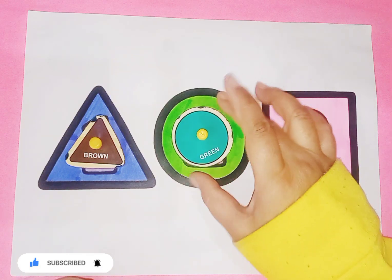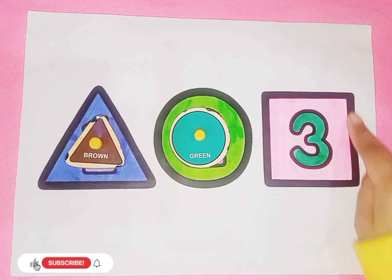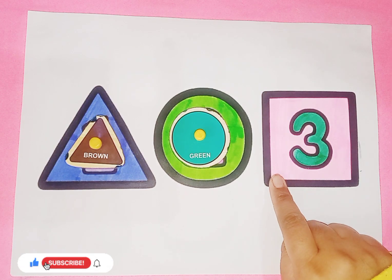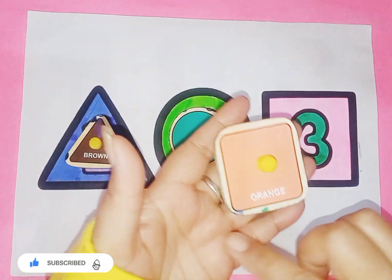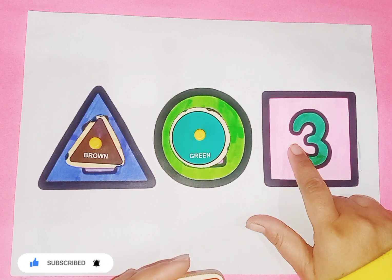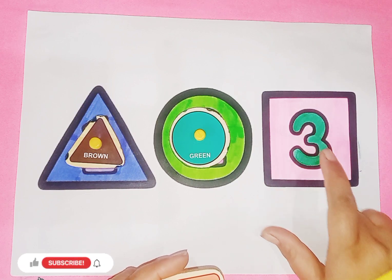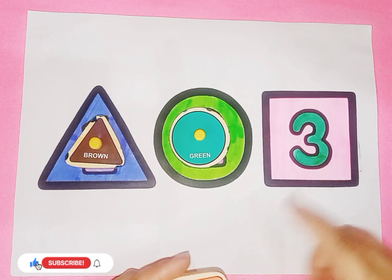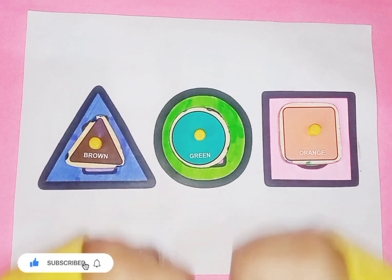This is square. Which shape is this? This is square. Square has four sides and four sides equal, equal. And number is three, number three, T-H-R-E-E, three.